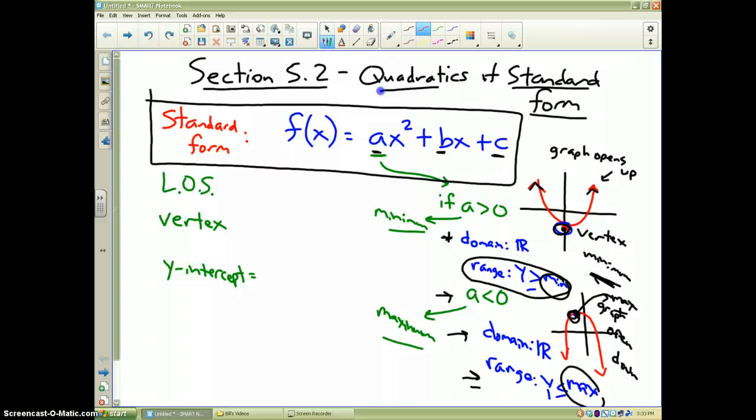C is really the y intercept. That's probably the most important meaning that C has. The B value is hard to determine what it does or how it affects the graph or the function. But it does play a role in two things: The line of symmetry which I abbreviated LOS and the vertex.